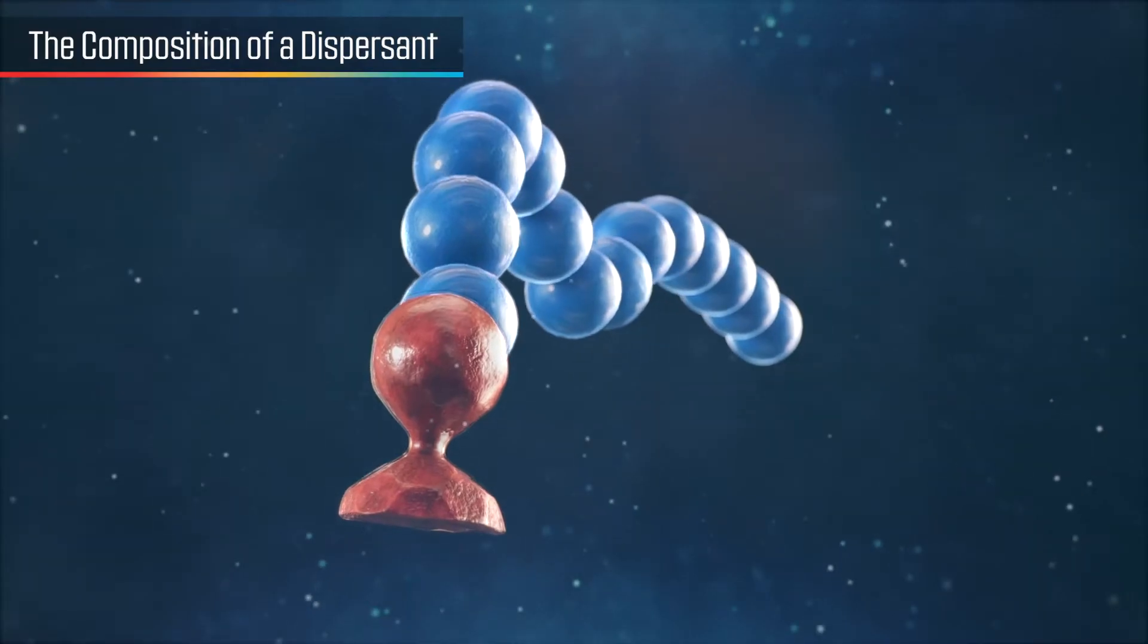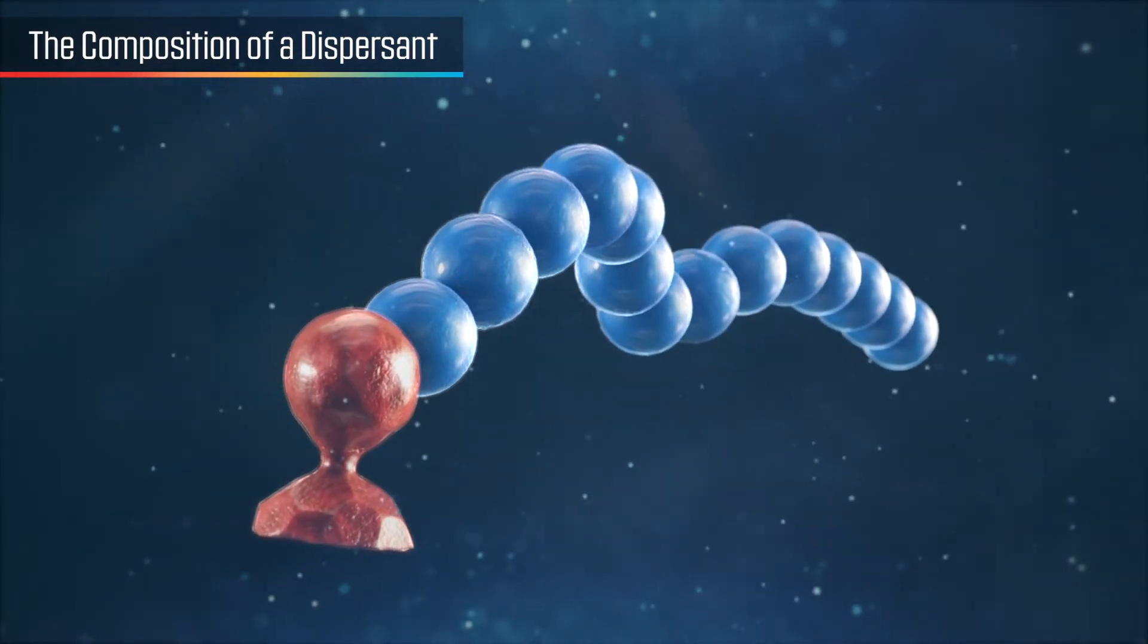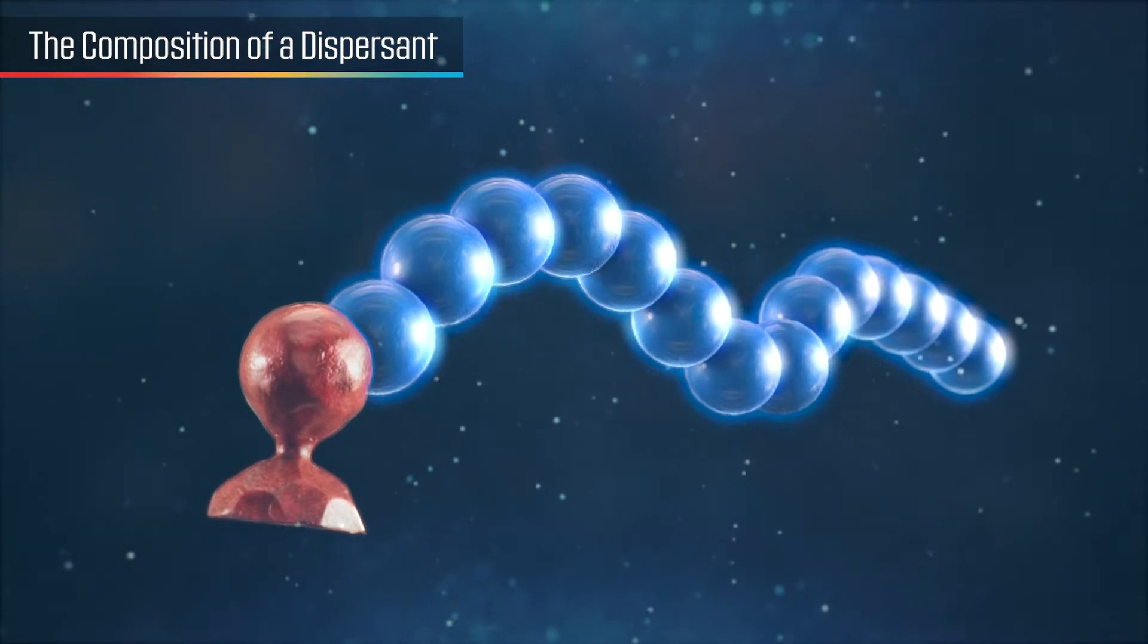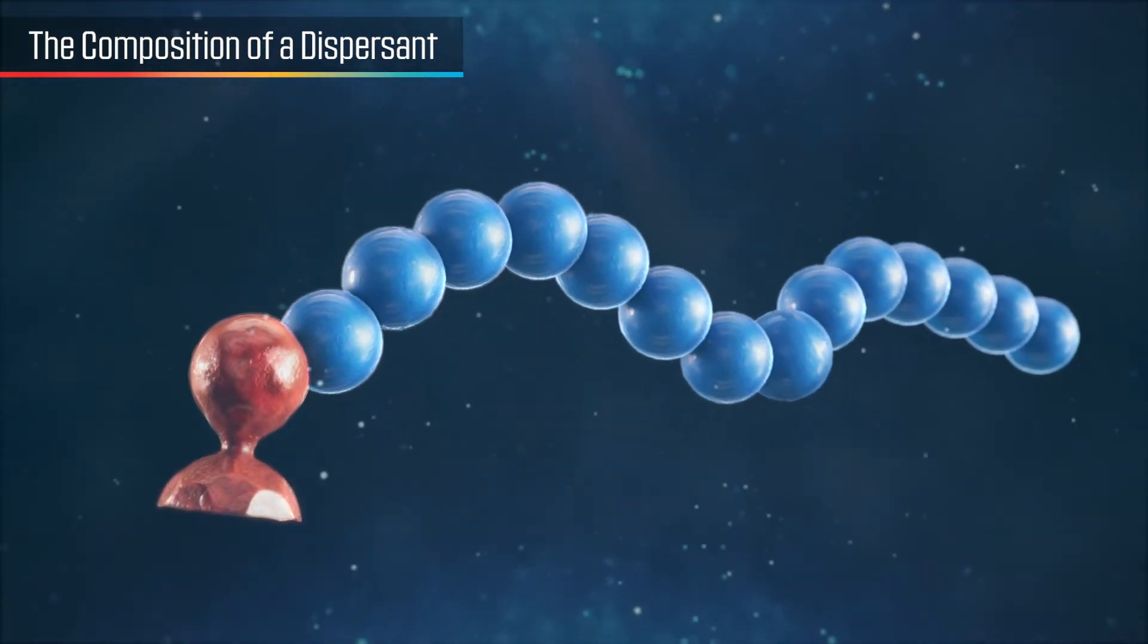A dispersant consists of two parts: an anchoring segment that adsorbs onto the pigment, and a polymeric chain that creates a steric barrier that stabilizes the dispersion.